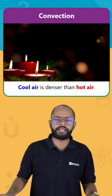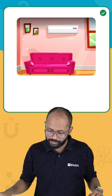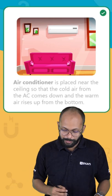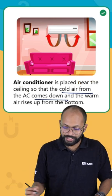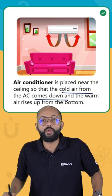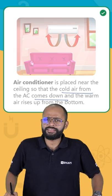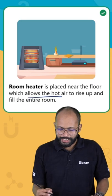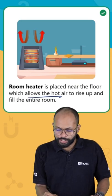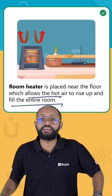So let's talk about air conditioners. The job of an air conditioner is to take in warm air and give out cold air. We place them near the ceiling so that cold air from the AC can come down and warm air can rise up from the bottom. Room heaters, on the other hand, are placed near the floor because it allows the hot air to rise up and fill the entire room.